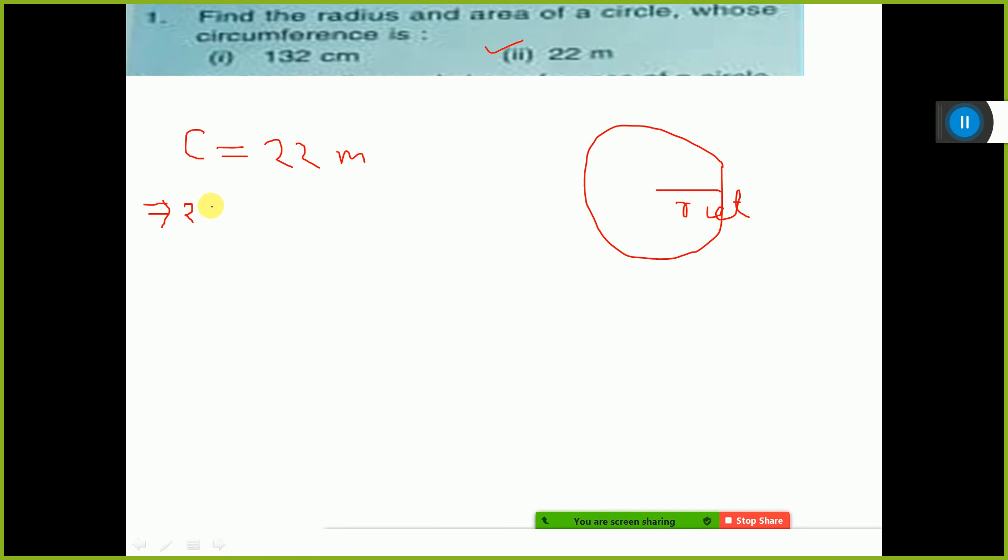2πr. 2πr is equal to 22 given. Then what will be the value of r?